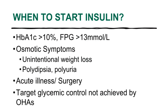50 to 90% of type 2 diabetes patients will need insulin after 5 to 10 years from the initial diagnosis. When should we consider starting patients on insulin? Patients with severe hyperglycemia — for example, HbA1c more than 10%, fasting plasma glucose more than 13, or 2-hour post-prandial glucose more than 18.